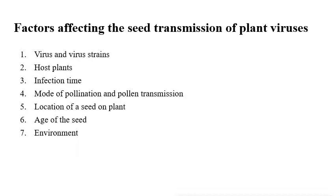Several factors affect seed transmission of plant viruses. These factors can reduce or increase the virulence of the plant viral disease. The factors involved in seed transmission are: virus strain, host plant, infection time, mode of pollination and pollen transmission, location of seed on plant, age of seed, and environment.